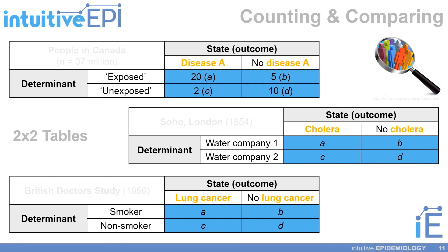I showed this two-by-two table in the last video where I talked about a hypothetical disease A, so somebody may experience disease A while somebody else may not. Similarly, some people may be exposed to a given determinant or risk factor, and others may be unexposed.